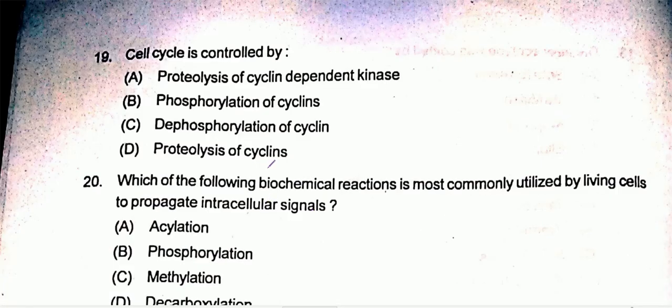Question nineteen is about cell cycle control. The cell cycle is controlled by phosphorylation of cyclin — this will be the correct answer, option B.